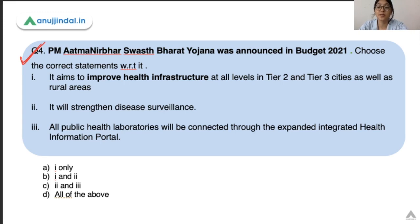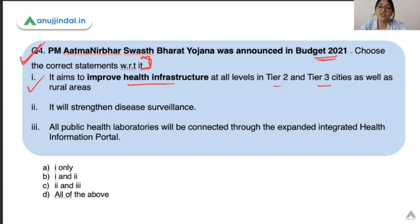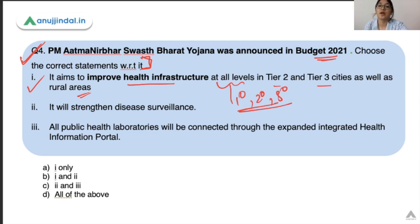The fourth question: PM Aatma Nirbhar Swasth Bharat Yojana was announced in Budget 2021. You need to identify the correct statement with respect to it. The first statement is: it aims to improve health infrastructure at all levels in tier 2 and tier 3 cities as well as the rural areas. This is absolutely correct — it is going to strengthen health infrastructure at all levels — primary, secondary, and tertiary — in tier 2 and tier 3 cities and rural areas.